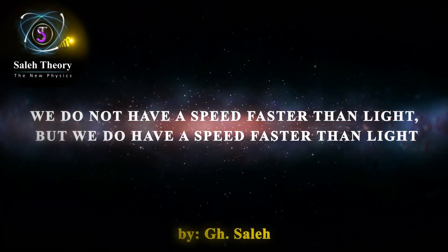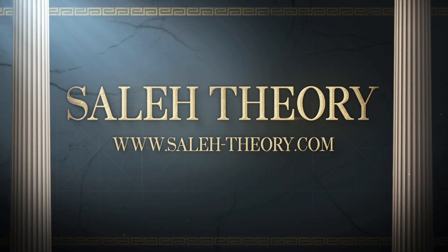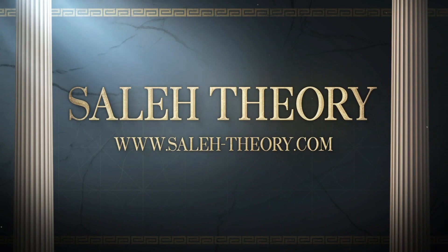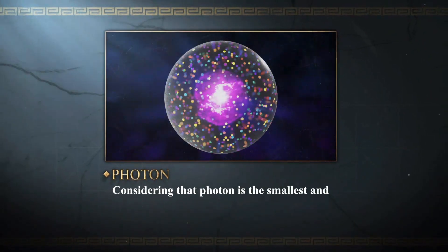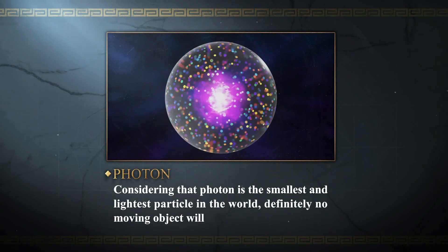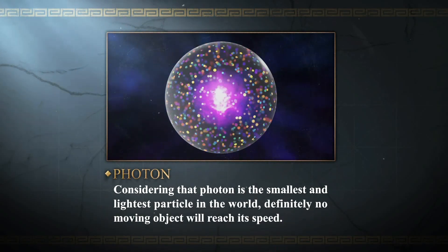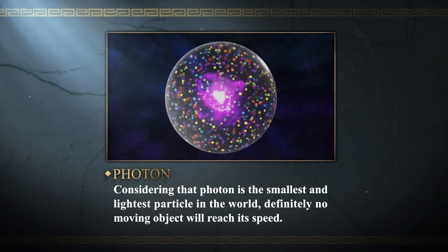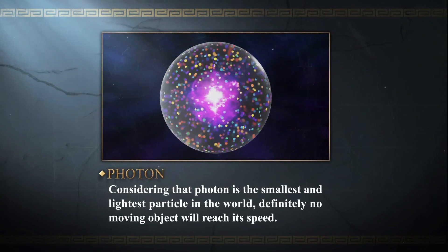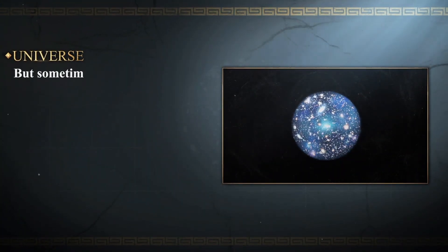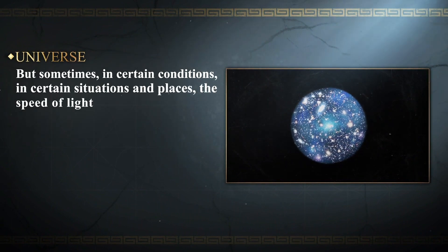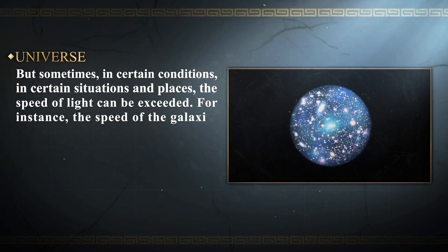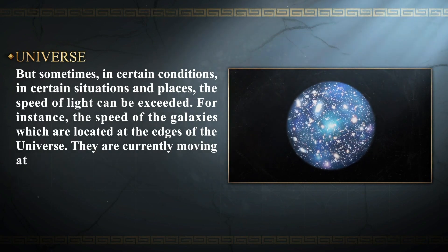We do not have a speed faster than light, but we do have a speed faster than light. Considering that the photon is the smallest and lightest particle in the world, definitely no moving object will reach its speed. But sometimes, in certain conditions, in certain situations and places, the speed of light can be exceeded.